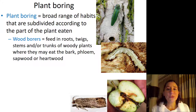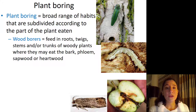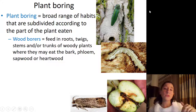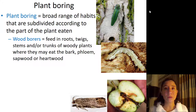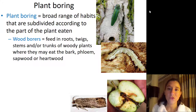Wood borers like the emerald ash borer feed on the roots, twigs, stems, or trunks of woody plants, eating mainly the bark, phloem, sapwood, and heartwood of the tree. The emerald ash borer is so problematic because it girdles the tree — it makes a wide circle around the tree so all of the nutrients from photosynthesis can't get down to the roots, and likewise water can't get up. The trees just die. Very, very sad.